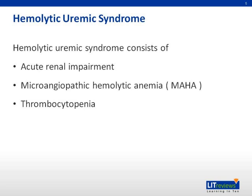Hemolytic uremic syndrome, HUS, usually occurs in children and has the classical clinical presentations of acute renal impairment, which may be the main clinical presentation and may require dialysis support. However, classical HUS usually runs a self-limiting process without long-term sequelae. Patients also have microangiopathic hemolytic anemia, MAHA, with similar laboratory findings to TTP.